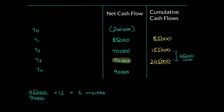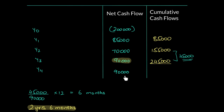Therefore, the payback period is two years and six months. It takes the firm two full years and six months more to recover their initial investment of £200,000. The payback period essentially answers how long it takes the firm to recover their initial investment, and as you can see, it ignores any cash flows after the recovery point.